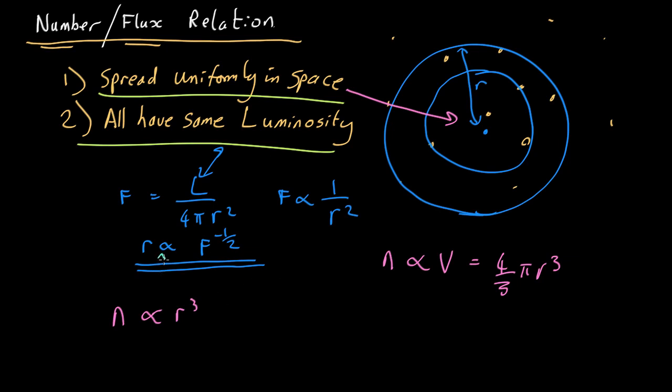But we know that r is proportional to F to the minus a half, so we end up with the number proportional to this cubed, so the flux to the minus 3 over 2.